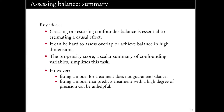Key ideas so far: we need to create or restore confounder balance. It can be hard to assess overlap or achieve balance in high dimensions, so the propensity score lets us do this in a simplified way. But fitting a model for treatment doesn't guarantee you've achieved balance. How you use that model also matters — the same propensity score model gave me great balance when I used inverse weighting, but didn't provide local balance when using quintiles. So even if I fit a model that looks good, I have to be careful in how I use it.